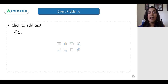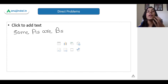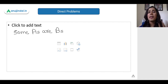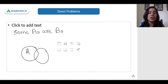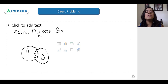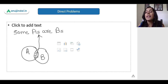A very common statement in syllogisms is 'some A's are B's.' What exactly does this mean? If I draw a universe of all A's and a universe of B, there is an intersection which is both A and B. So basically, when I say that 'some A's are B's,' I mean the intersection of A and B.